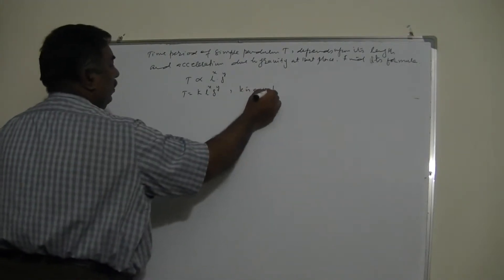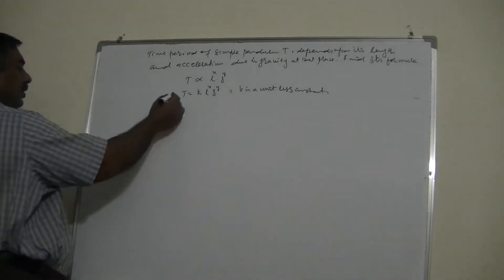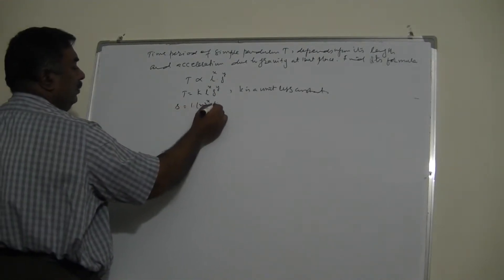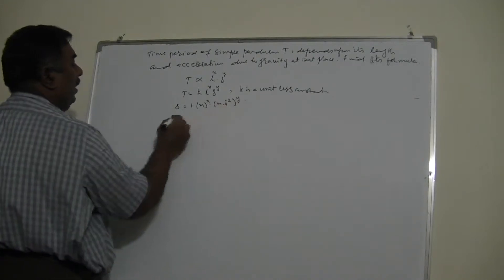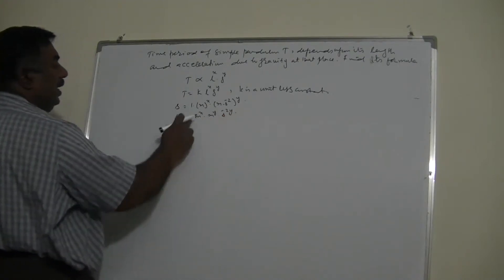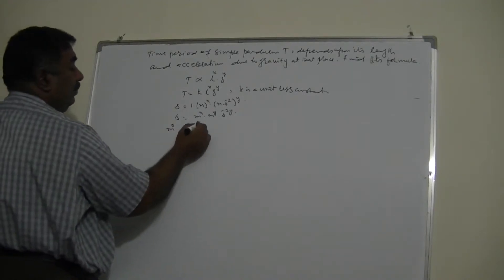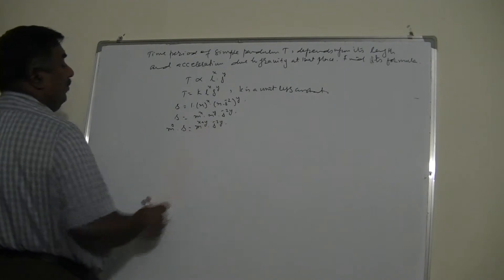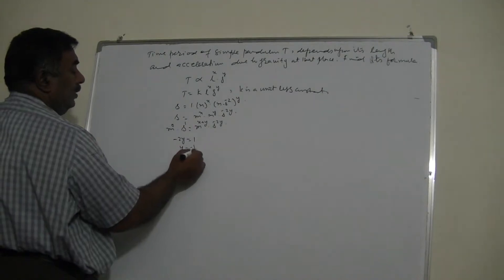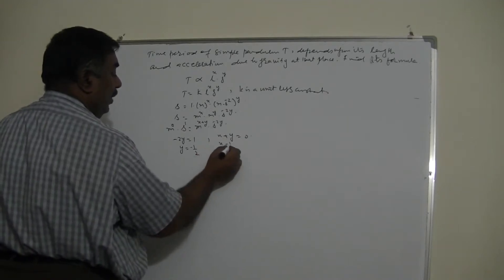Writing the units: the unit of T is seconds; k has no units; l is meters to the power x; g is (m/s²) to the power y. So: s = m^x · m^y · s^(-2y), which gives m^(x+y) · s^(-2y). There are no meters on the left, so m^0. Comparing: -2y = 1, so y = -1/2; and x + y = 0, so x = 1/2.